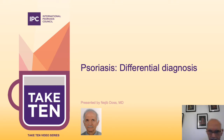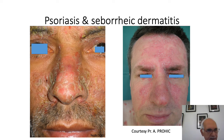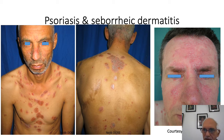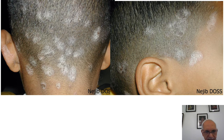Psoriasis and seborrheic dermatitis are both chronic erythematous scaly dermatoses that can involve the scalp and the face. It may be difficult to differentiate these two diseases when there is isolated scalp involvement. Dermoscopy seems to be valuable for clinical diagnosis and differential diagnosis of scalp psoriasis and seborrheic dermatitis.